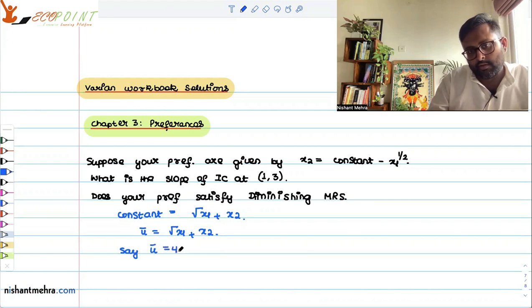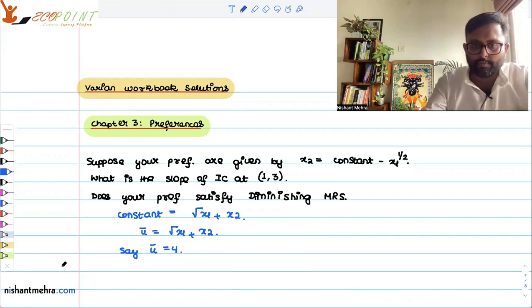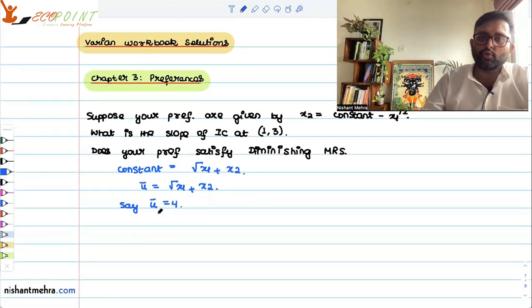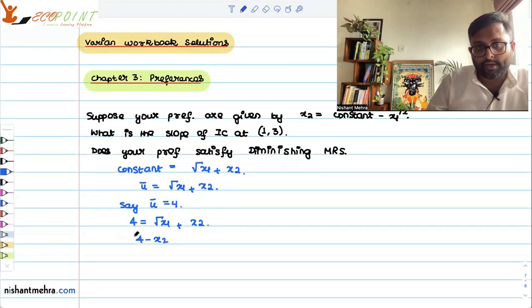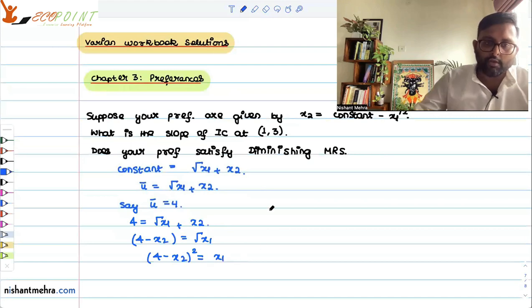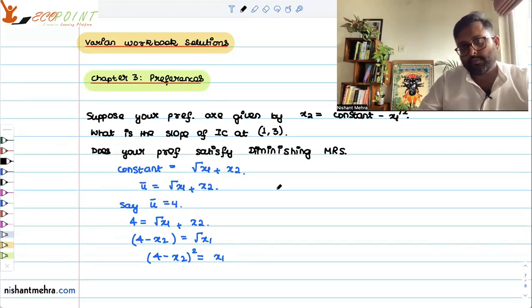And say u bar is equal to 4. Now, we want to get such points of x1 and x2 which are going to give me utility 4. So I can write this as 4 minus x2 equals root of x1. Therefore, (4 minus x2) squared equals x1. So we will just write a few points.